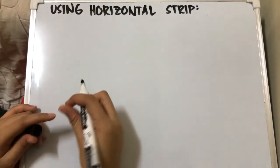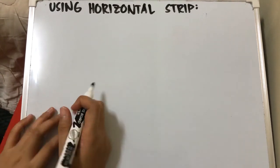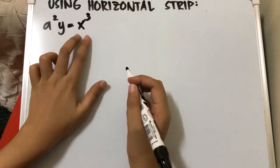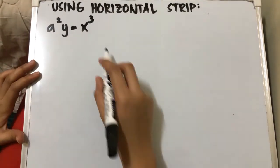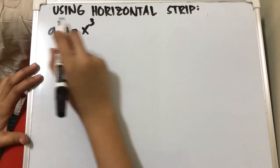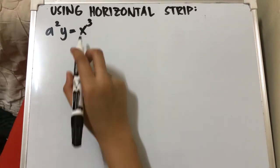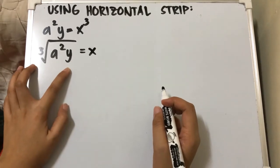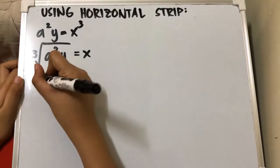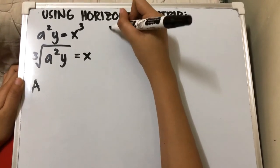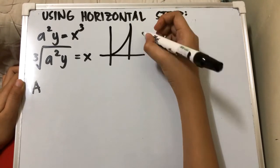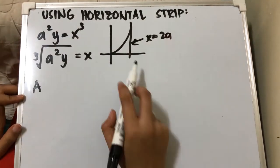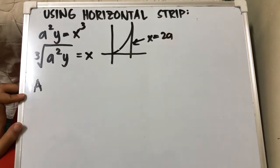Now we solve the same problem using a horizontal strip. Starting from a²y = x³, we isolate x by taking the cube root of both sides: x = ∛(a²y). This is our equation for x in terms of y. Looking at the graph, the region is bounded on the right by x = 2a and on the left by the curve x = ∛(a²y).